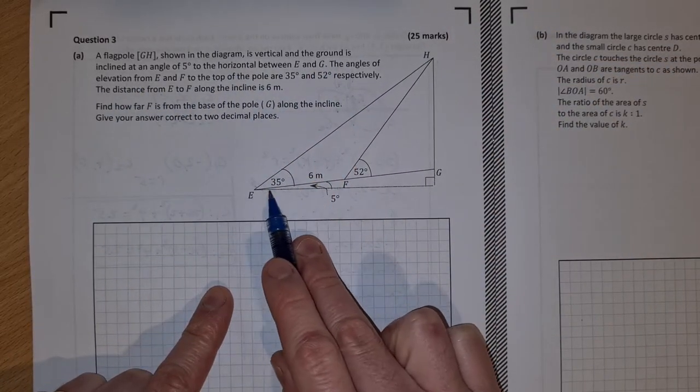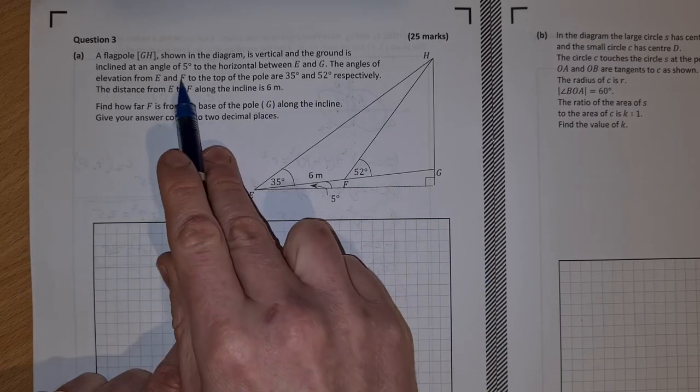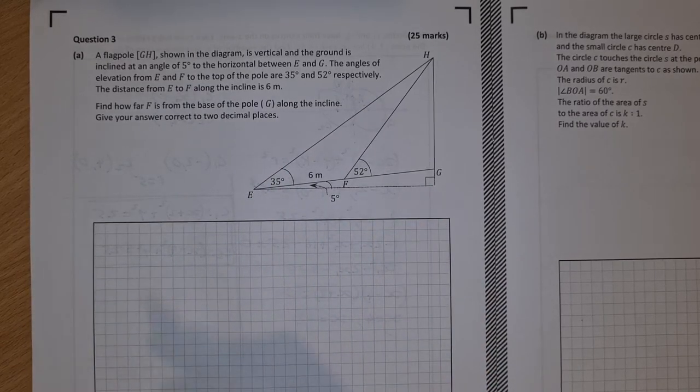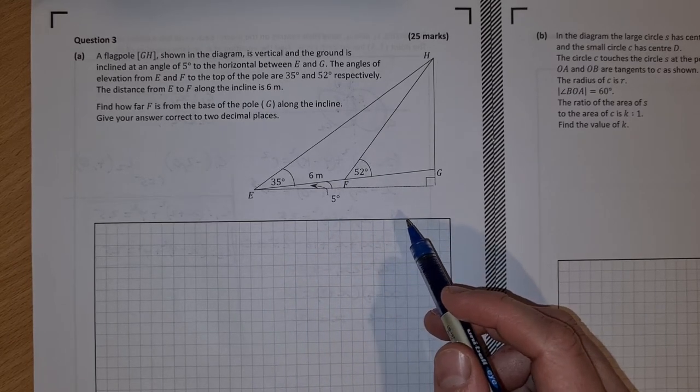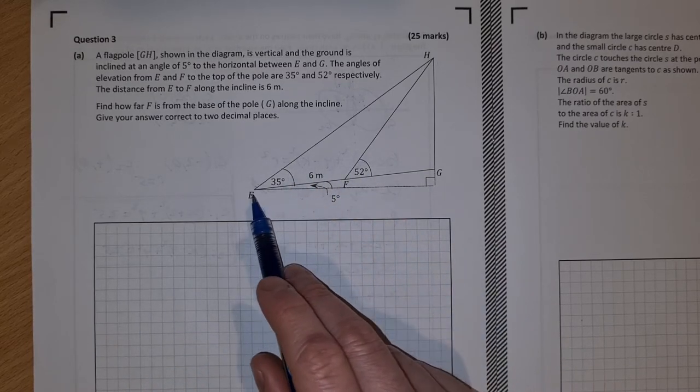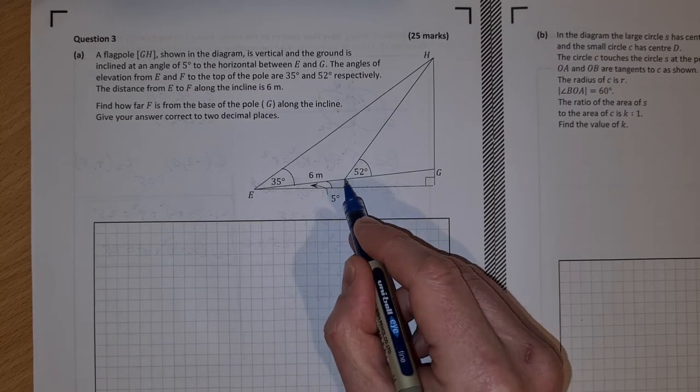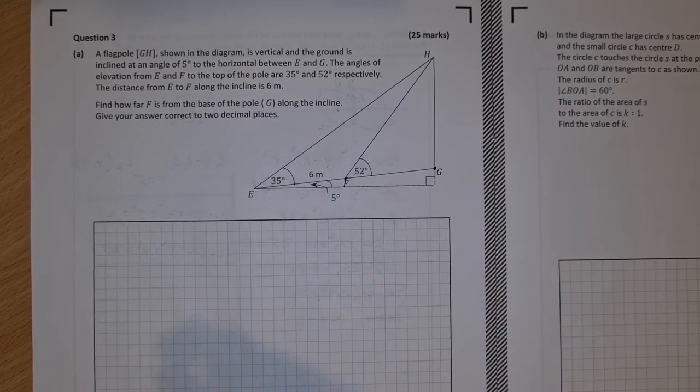the ground is inclined at an angle of 5 degrees, so this is the angle of the ground here, to the horizontal between E and G. The angles of elevation from E and F to the top are 35 degrees and 52 degrees respectively. The distance from E to F along the incline is 6 meters. How far is F from the base of the pole G along the incline? So this distance here, how far is F from G? Give your answer correct to two decimal places.